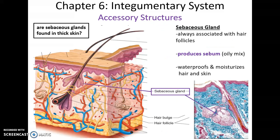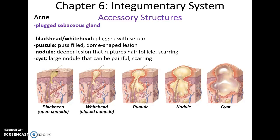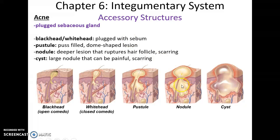Sebaceous glands are always associated with hair follicles and produce sebum, an oily mixture that helps to waterproof and moisturize the hair and skin. Sometimes sebaceous glands get plugged; when this happens you can develop acne. A blackhead or whitehead means your sebaceous gland is plugged with sebum and maybe bacteria. A pustule is when the sebaceous gland begins to stretch as it fills with pus — white blood cells, plasma, and bacteria. This can continue and get larger, becoming a nodule, which can cause rupturing through the hair follicle and potential scarring, and then an even larger cyst, which has a dense layer of connective tissue around it trying to isolate the infection and is very painful.